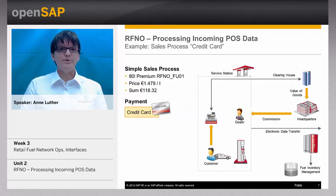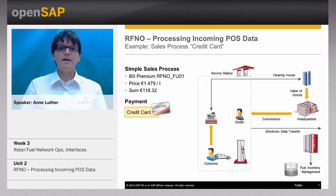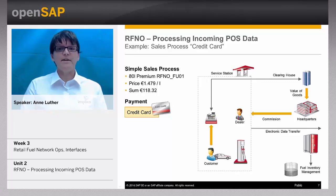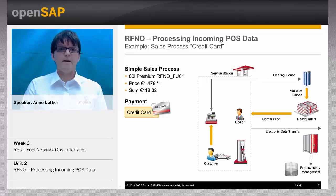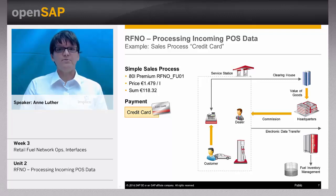Another simple process could be one where the customer at the service station paid with a credit card, so the company gets the value of goods from the clearing house. The process finder has to identify a business transaction that creates documents and items to settle with the clearing house. With customizing the business transaction and the process rule schema, you can create every complexity you want.